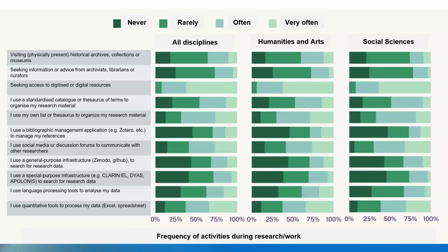We also used questions to estimate the frequency of activities related to digital methods or infrastructures. For example, we asked how often participants physically visit historical archives, collections, or museums — the majority answered never or rarely. On the contrary, participants very often seek access to digitized or digital resources. To our surprise, 75 percent of all participants said they rarely or never use general purpose infrastructures like Zenodo or GitHub, or special purpose ones like CLARIN.